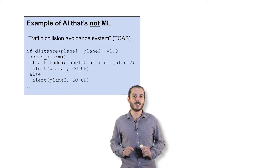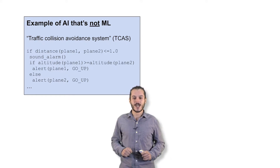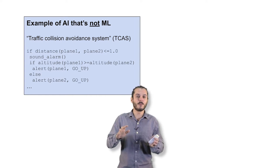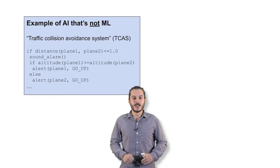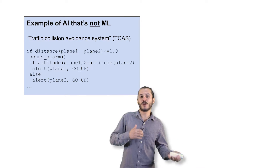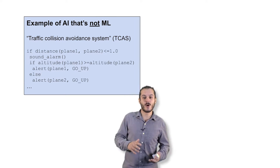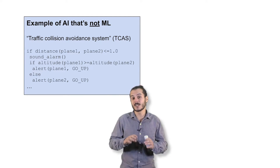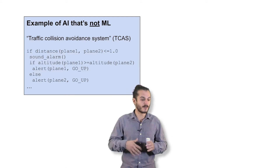To get a schematic idea of the difference between these two, we might consider two different artificial intelligence systems. One is called the traffic collision avoidance system, TCAS, a system developed many decades ago to help planes avoid mid-air collisions. This is essentially a long list of if statements and conditions that says when to trigger alarms, when to tell one plane to go up and another to go down. These are hard-coded rules — not a machine learning problem.